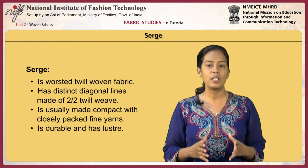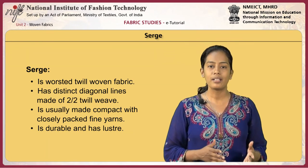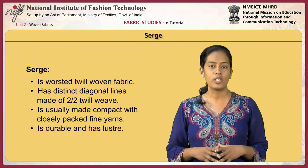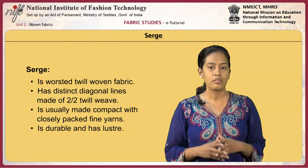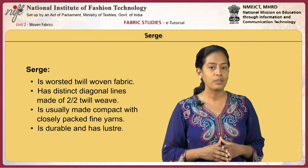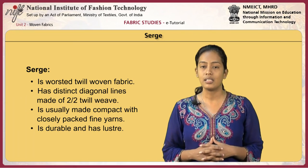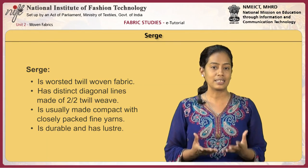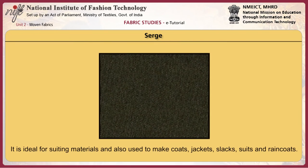Serge is a worsted twill woven fabric. The fabric has distinct diagonal lines made of 2x2 twill weave, and is usually made compact with closely packed fine yarns. Serge is durable and has lustre. Regular wear makes the fabric glossy, and it is ideal for suiting materials. The fabric is widely used for making coats, jackets, slacks and suits. It is also given a water repellent finish and used as raincoats.